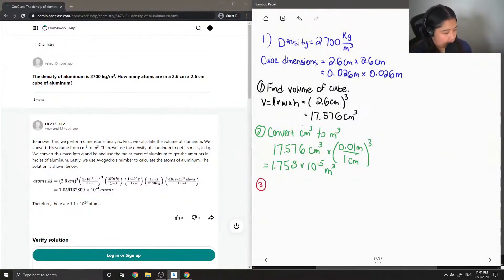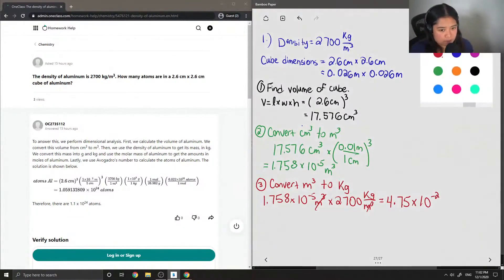So step three is to convert meter cubed to kilograms. If we recall that our density is 2,700 kilograms per meter cubed, we would just need to multiply our meter cubed value by the density. You'll notice that our units for meters cubed will cancel out and we're left with a value in kilograms, which is 4.75 times 10 to the negative 2 kilograms.